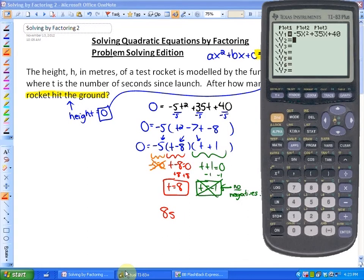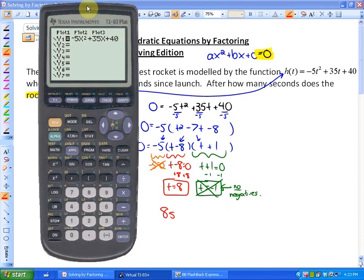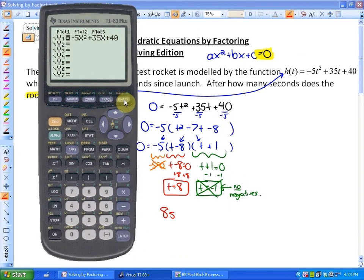If you'd like to see this on a graphing calculator, here is the exact same function on a graphing calculator. And what we're looking here is at the path of the rocket.